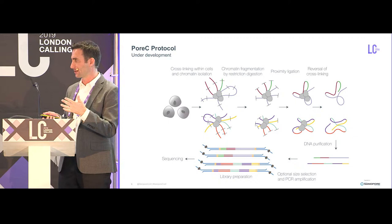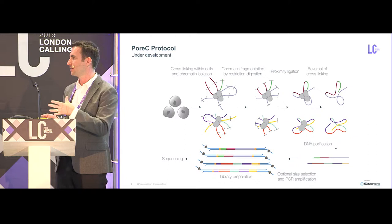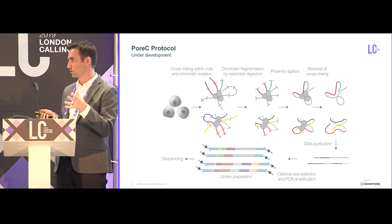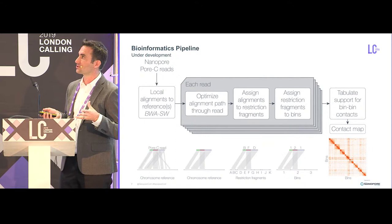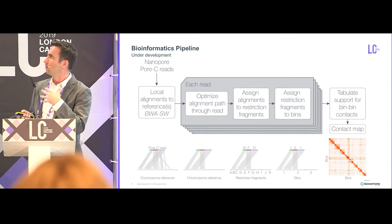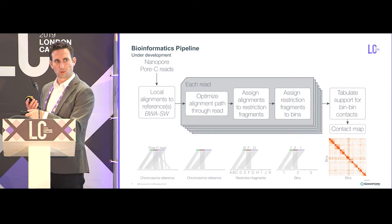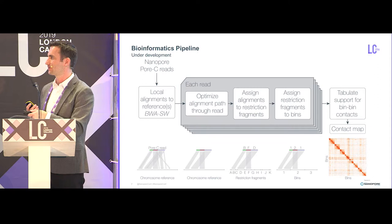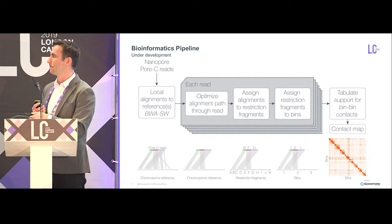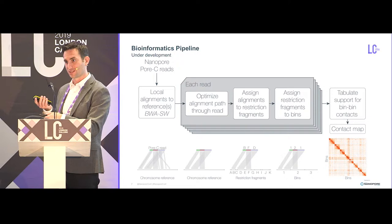Right now we're playing with the protocol — it's not released yet. We're trying to finalize it, and we're playing with whether we can get away without doing size selection or PCR, which would be great. There's also a bioinformatic pipeline we'll release once the protocol is ready. You start by doing a very sensitive alignment of the reads against the reference genome, which can lead to multiple overlapping alignments on your read. So we put it through an optimization step that finds the optimum alignment path so each part of the read is represented only once. We then assign these to restriction fragments using a virtual digest, and then to equally sized bins on the genome, which allows us to build the contact maps.